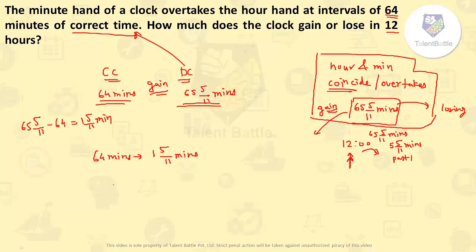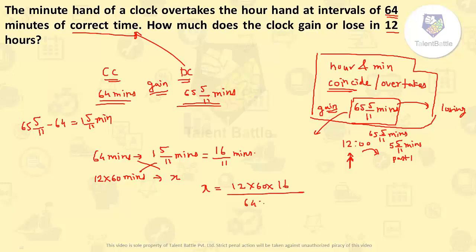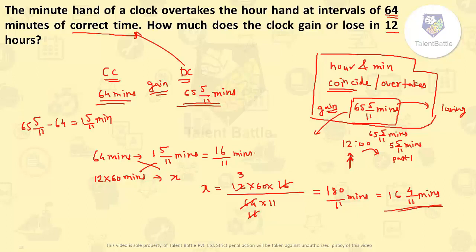Gain in 12 hours: (15/11) × (720/64) = (16/11) × (720/64). Simplifying: 16 cancels, giving 720/44 = 180/11 = 16 4/11 minutes. So in 12 hours the clock gains 16 4/11 minutes. That is the correct answer.